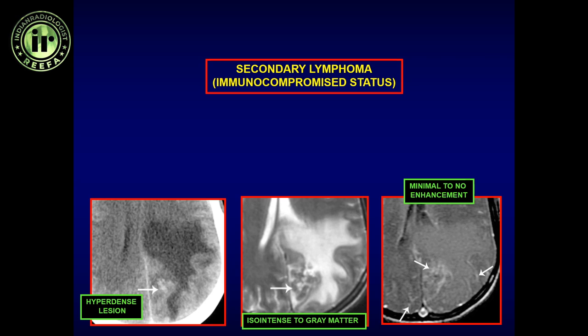From PML — progressive multifocal leukoencephalopathy — PML tends to involve the subcortical U fibers, whereas lymphoma does not. PML almost never enhances in its primary state; secondary lymphoma almost always has some enhancement. However, secondary lymphoma may not enhance if the patient has been treated with steroids. Conversely, a patient with PML may enhance when his immunity is coming back, in an entity called immune reconstitution inflammatory syndrome, or IRIS.